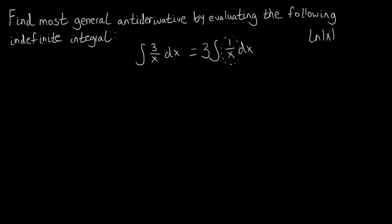If we were to take the derivative of the natural log of x, it would return this rational function as a derivative. So because the derivative of ln(x) gives us 1 over x, the antiderivative of 1 over x gives us ln(x). So what we get for this question is 3 times the antiderivative of 1 over x, which is natural log of x, and then we get plus C — that arbitrary constant — giving us 3 times the natural log of x plus C.